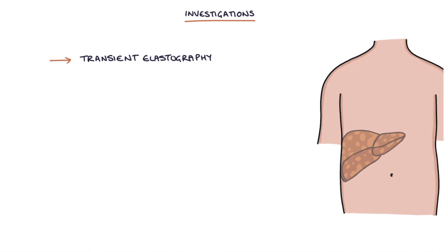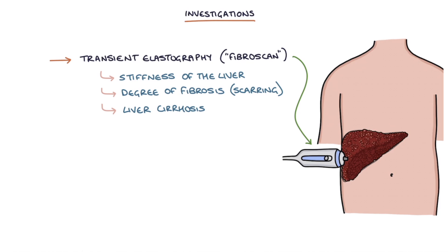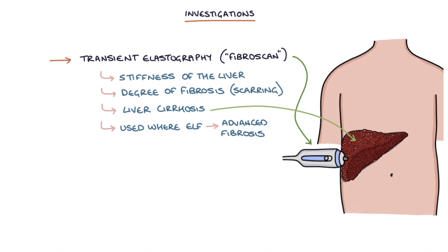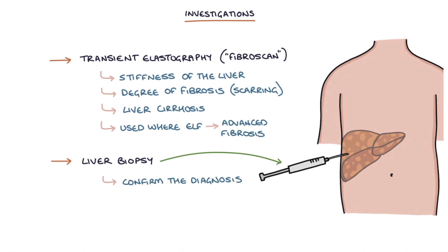Transient elastography, or a FibroScan, can be used to assess the stiffness of the liver using high-frequency sound waves. This helps determine the degree of fibrosis or scarring to test for liver cirrhosis. It is used in patients with NAFLD where the enhanced liver fibrosis, or ELF test, indicates advanced fibrosis. A liver biopsy may be required to confirm the diagnosis and exclude other causes of liver disease.